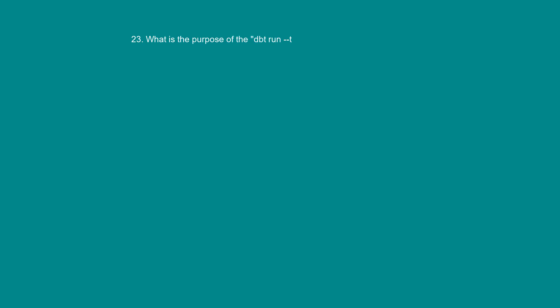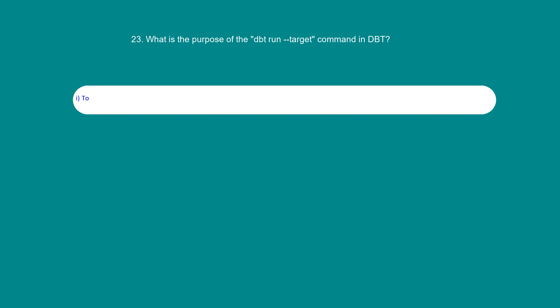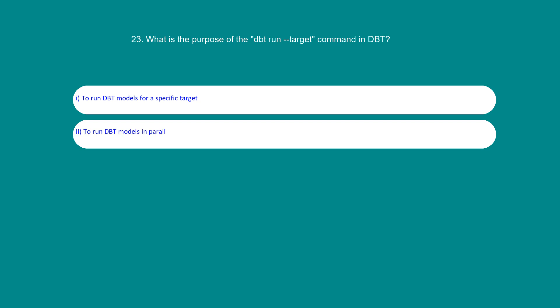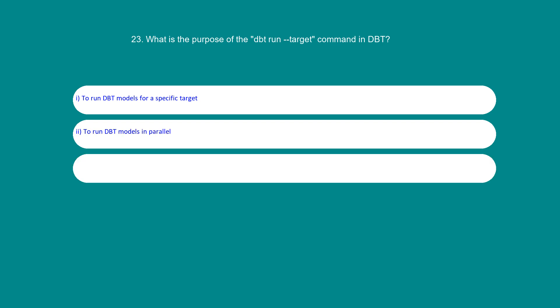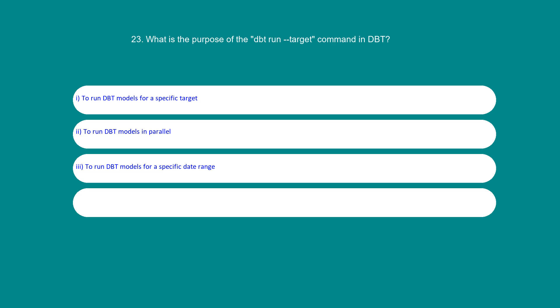What is the purpose of the dbt run --target command in dbt? Option 1: To run dbt models for a specific target. Option 2: To run dbt models in parallel. Option 3: To run dbt models for a specific date range. Option 4: To run dbt models for a specific environment. The answer is 1: To run dbt models for a specific target.